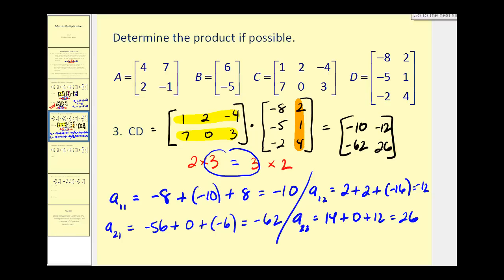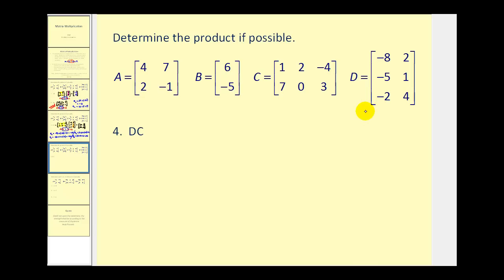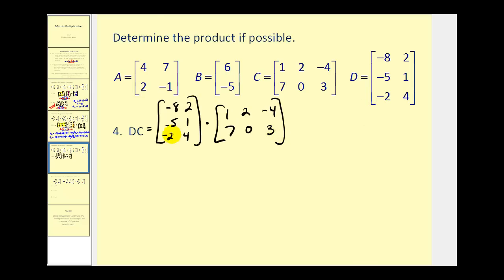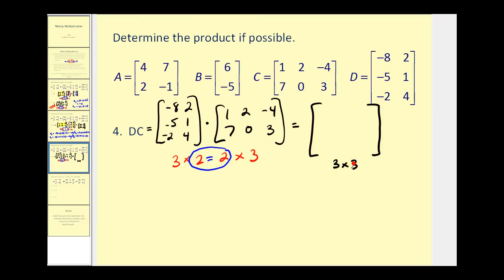I think we have time for one more example. Let's find matrix D times matrix C. We'll start by rewriting this in the correct order and check to make sure it's possible. This is a three by two and this is a two by three — these two numbers tell us it is possible. The product will be a three by three matrix. For the element in row one, column one, we'll multiply row one in the first matrix times column one in the second: negative eight times one plus two times seven, that's fourteen. So we have positive six.